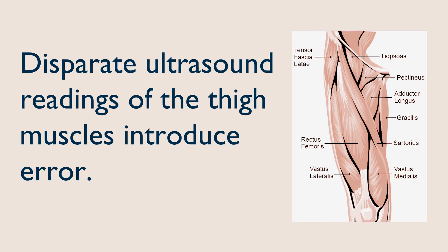Ultrasound recordings on different locations on the thigh create variability between measurements, which introduce associated error. The thigh muscle is transversely non-uniform, so as you go down the thigh, it decreases in thickness down the femur from the pelvis to the patella or the kneecap. Currently, there is no formal training program or standardized protocol to educate clinicians on appropriate ultrasound techniques, so reliability, reproducibility, and accuracy should not be assumed.